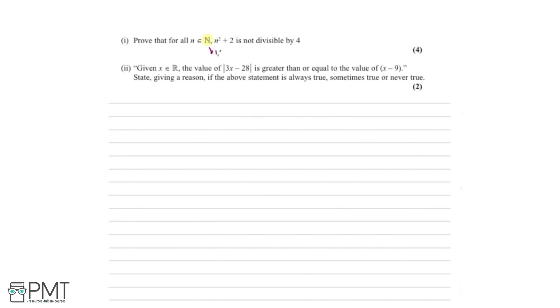There are lots of different methods of proof, and looking at the question we try to work out which one would be best. For example, one method is proof by counter example — but we couldn't do that because the question asks us to prove for all n, so a counter example would just cover one particular case. The method that fits here is proof by exhaustion, because we need to prove for all values of n. We're not going to plug in every single possible value since there are infinitely many.